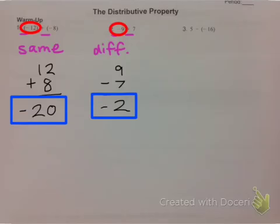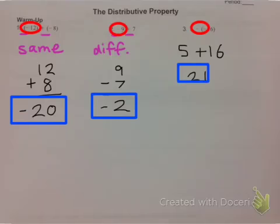And for number three, this is a really important thing to remember. Whenever you see that double negative, it turns into a positive. So I really have 5 plus 16, which is positive 21.